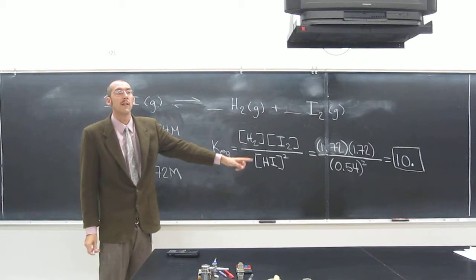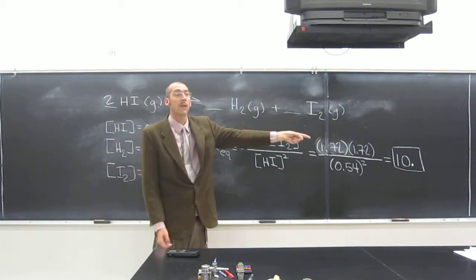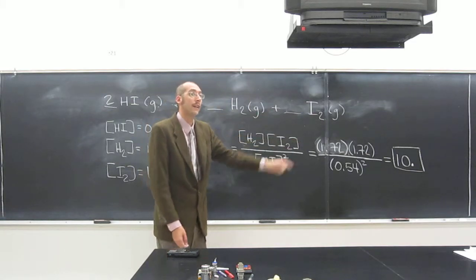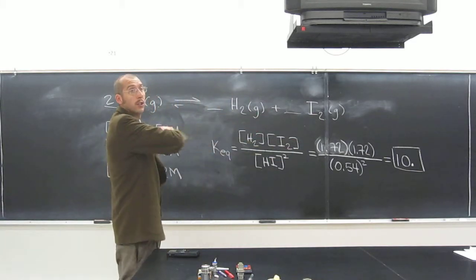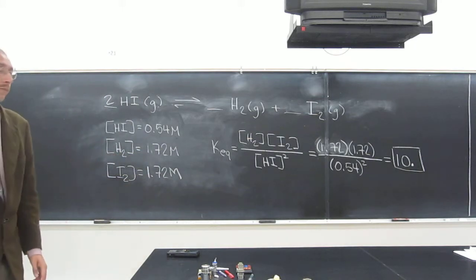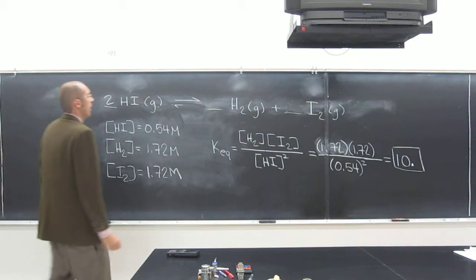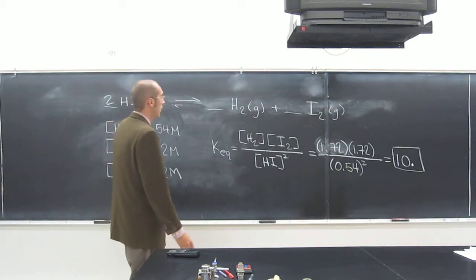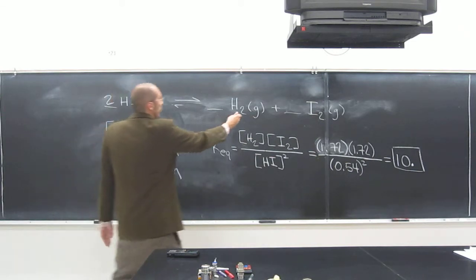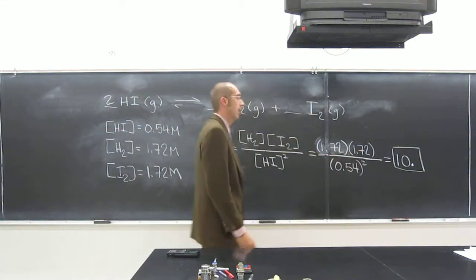Because the equilibrium constant of this is higher than one, this reaction, the product reaction going to the right, is happening to a greater extent than the reaction going to the left at equilibrium, once you get to equilibrium. So in other words, the concentrations of these things are higher, and you can see it through the concentration.